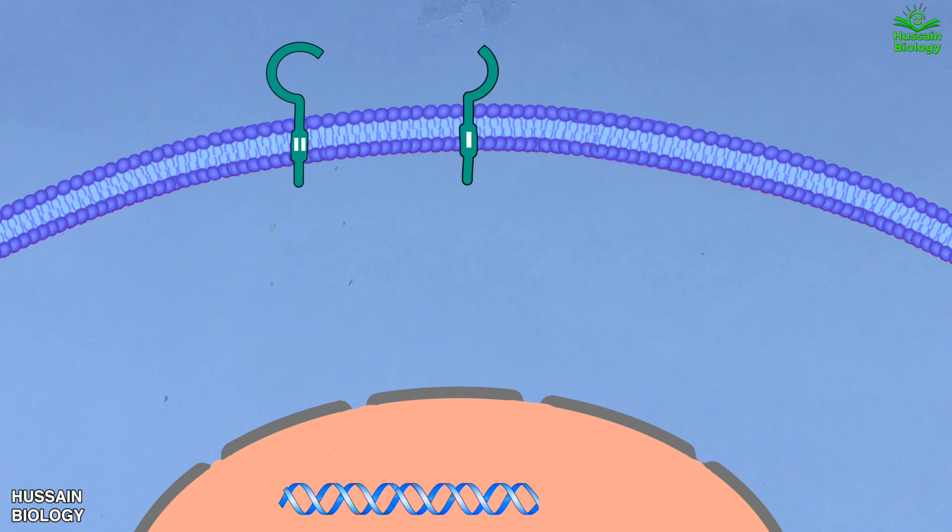Then we have the signaling molecule, which is nodal protein, but this is still immature and needs enzymes to become active. For this, we have the proprotein convertase enzymes, which act on immature nodal protein and convert it into mature nodal protein as shown in the animation. Then this nodal protein